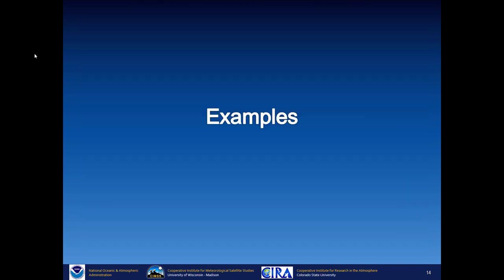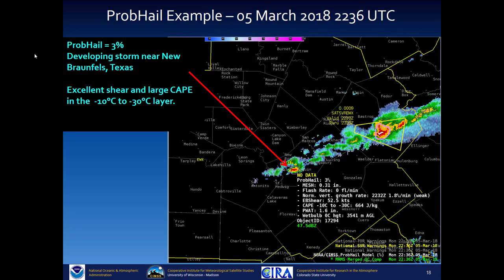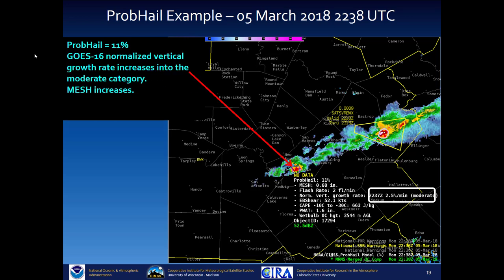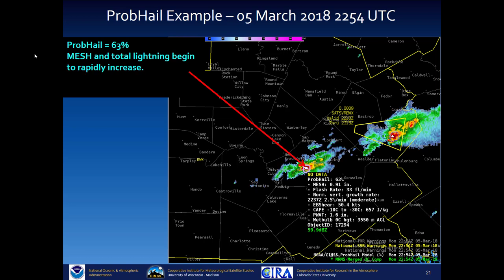Here is a PROB HAIL example from March 5, 2018, in a region of marginal risk from the SPC outlook. Initially PROB HAIL is 3% as a storm develops near New Braunfels, Texas, with great shear and large CAPE in the minus 10 to minus 30 Celsius layer. Two minutes later, satellite growth rate and MESH increase, raising PROB HAIL to 11%. Fourteen minutes after that, MESH continues to increase and total lightning also slowly rises. Two minutes later, MESH and total lightning rapidly increase and PROB HAIL jumps to 63%.